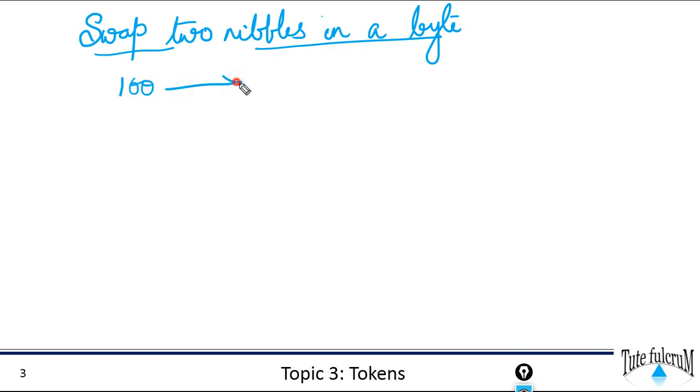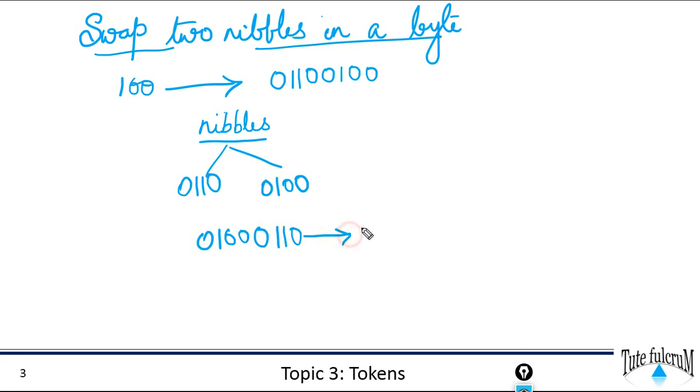For example let's take a number 100. 100 in binary is written as 01100100. So the two nibbles here is 0110 and 0100. So if we swap these two nibbles we will get 0100 and 0110. This is corresponding to 70 in decimal.